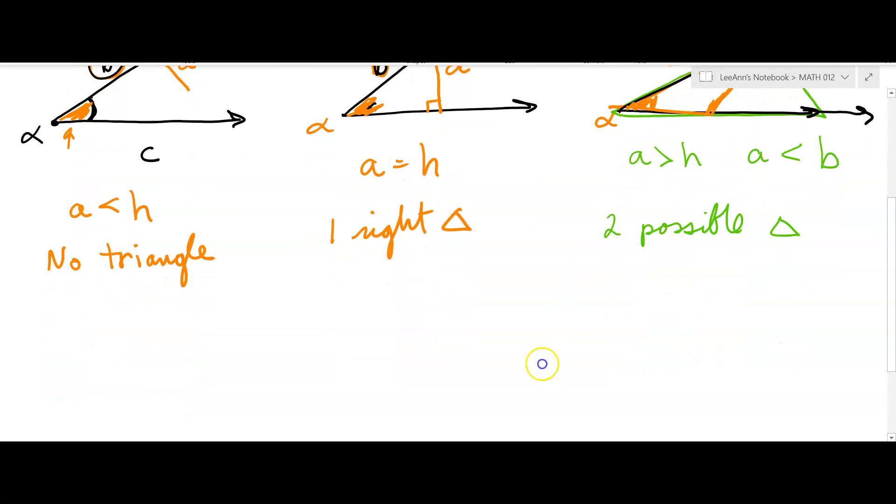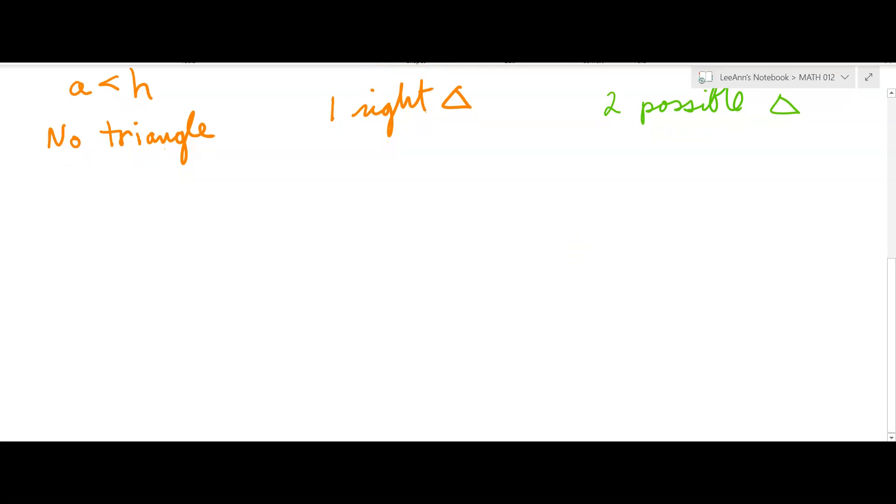One more case. You could have a ray, and then you know this angle alpha, and you know side, so you know this angle alpha, and you know this side b, and then you know c, and c goes like, or a, sorry, a goes like this.